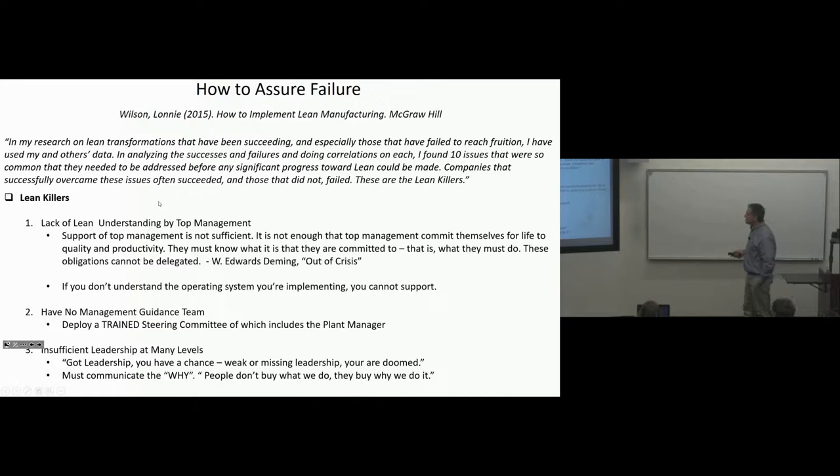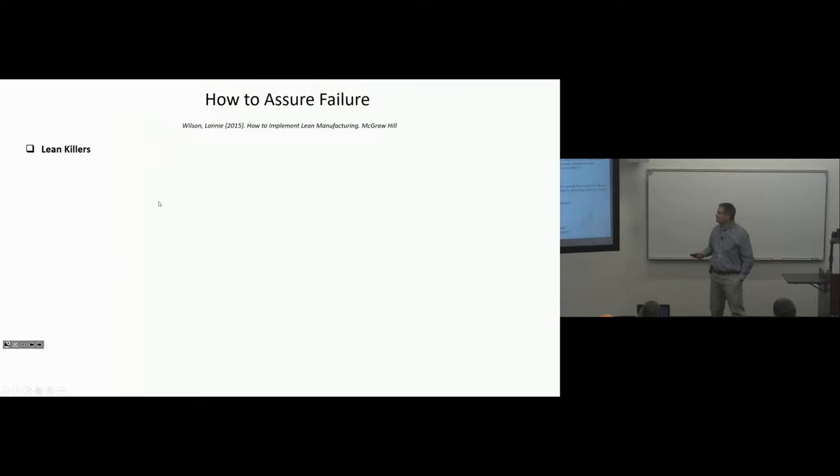Must communicate the why. People don't buy what we do. They buy why we do it. Lack of customer focus. Proper Hoshin planning helps accomplish this. Remember, we're talking about our vision. Who do we want to be in five years? Focus on the customer. Then cascade it down through the organization.